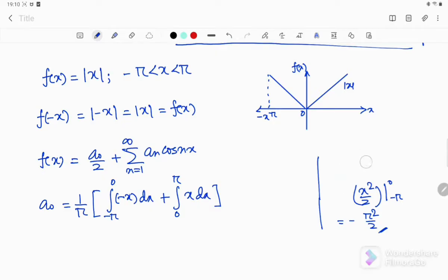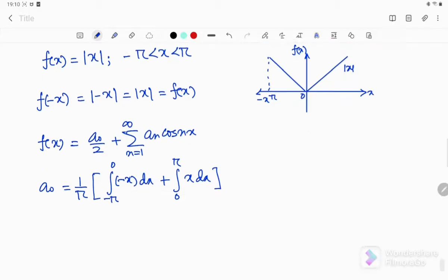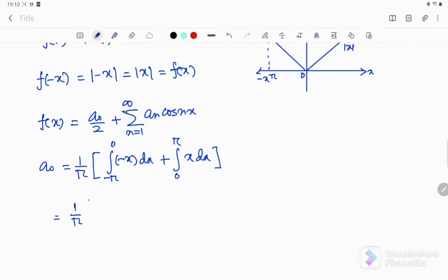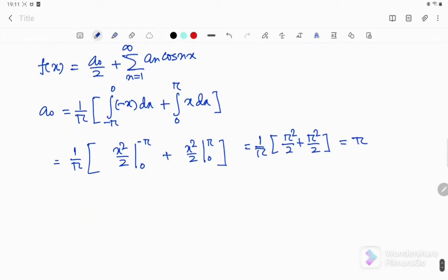Okay. This is true for mod cos x also. So I write here x square by 2. I am changing the limit here, switching the limit to absorb the minus sign. So you can see this is producing pi square by 2 plus pi square by 2, and that is pi square by 2. So a0 is pi here.